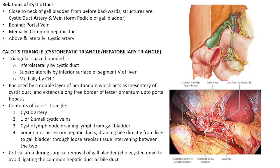The relations of the cystic duct: it is the anteriormost structure in this region. Behind it lie the cystic artery and then the cystic vein, then the portal vein. Medial to it lies the common hepatic duct.